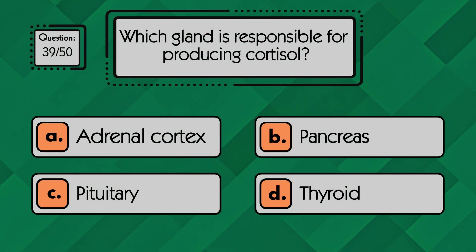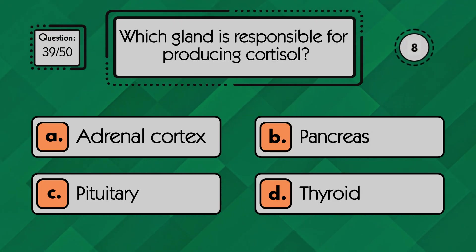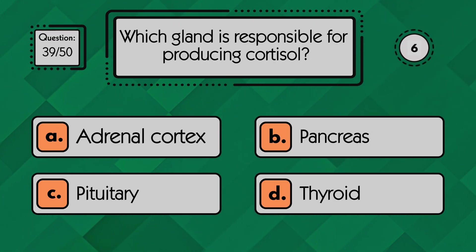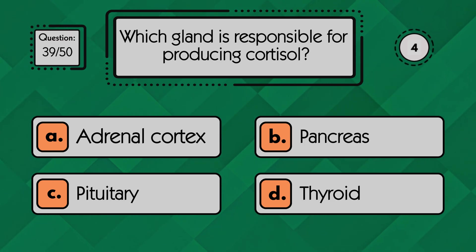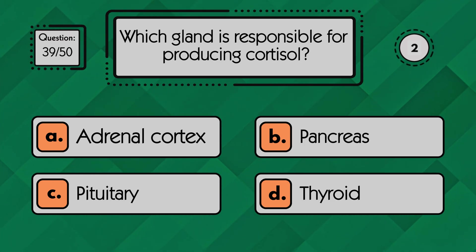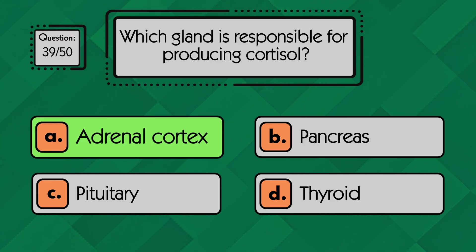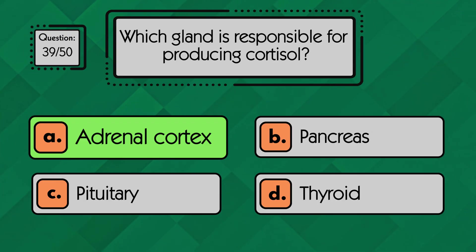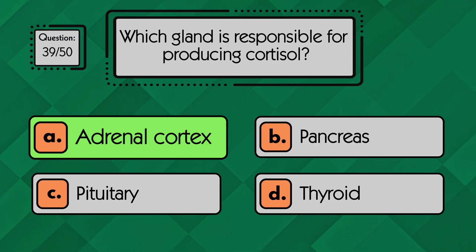Which gland is responsible for producing cortisol? The adrenal cortex is the gland that produces cortisol.